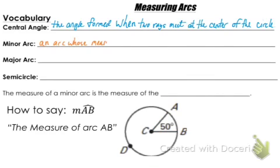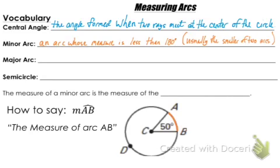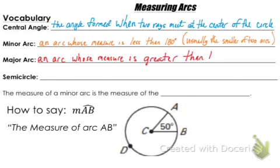A minor arc is an arc whose measure is less than 180 degrees. It's usually the smaller of the two arcs out of a circle. So an example of a minor arc in this circle would be arc AB. A major arc is an arc whose measure is greater than 180 degrees, which is usually the bigger arc. So a major arc in this circle would be arc ADC — we go the opposite way all the way around the circle.